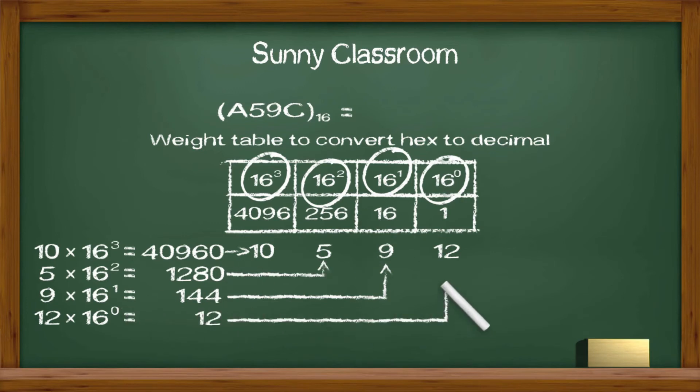Now we add up these 4 numbers and we get decimal number 42,396.